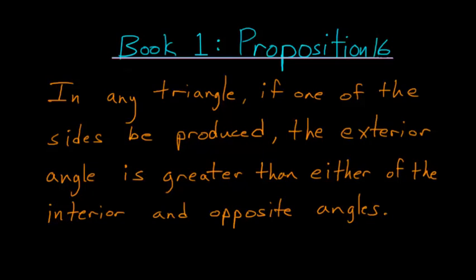For book 1, proposition number 16 of Euclid's elements, in any triangle, if one of the sides be produced, the exterior angle is greater than either of the interior and opposite angles.